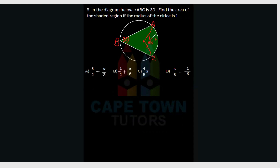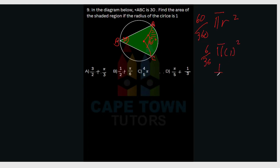Now we can work out the area of this sector. We have 60 degrees out of 360 degrees of the circle, multiplied by π r squared. So 60 over 360 times π times 1 squared — that gives 6 over 36 times π, which simplifies to 1 over 6 π, or π over 6.